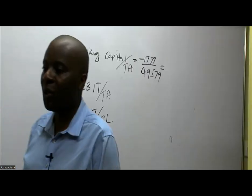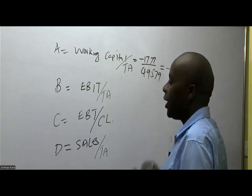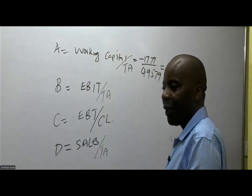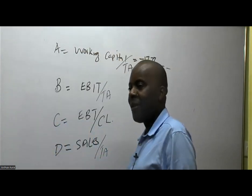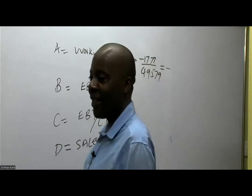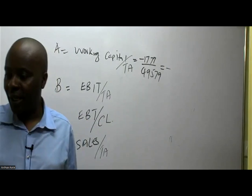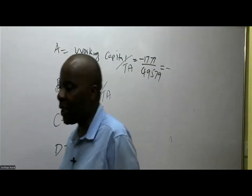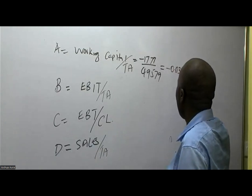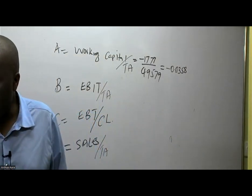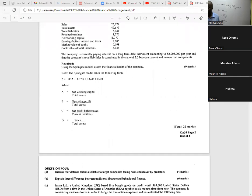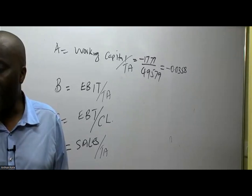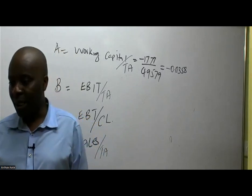Could you give me this figure in four decimal places? It will be negative zero point something. According to Liz Mathia, we have negative 0.0358, and all students are confirming this. So ratio A = negative 0.0358. This is from December 2021, question number three. Moving on to ratio B, we have EBIT divided by total assets. The EBIT — earnings before interest and taxes — is given as 2,605. So 2,605 divided by total assets of $49,579.